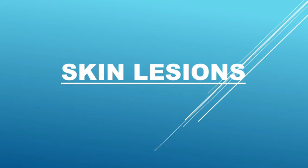Hello everyone. Today in this video we are going to learn about different types of skin lesions. A skin lesion is a part of the skin that has an abnormal growth or appearance compared to the skin around it. The skin lesion helps us to find out the local skin condition or infection, and also to find out any systemic diseases of the body which have caused the skin lesion. Identifying the type of lesion is very important.